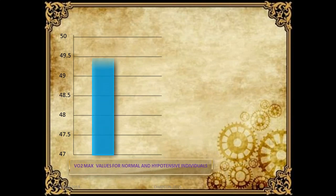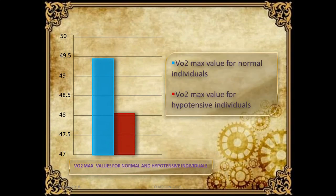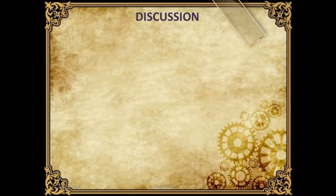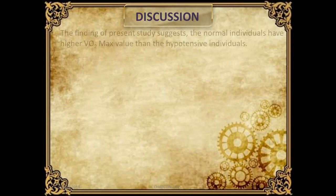This graph shows VO2 max values for the normal and hypotensive individuals. As you can see from the colors, the VO2 max value for the normal individual is quite high, while the VO2 max value for the hypotensive individual is lower.